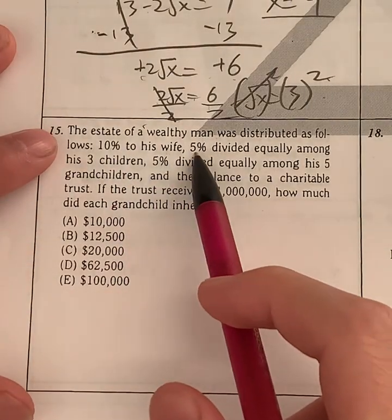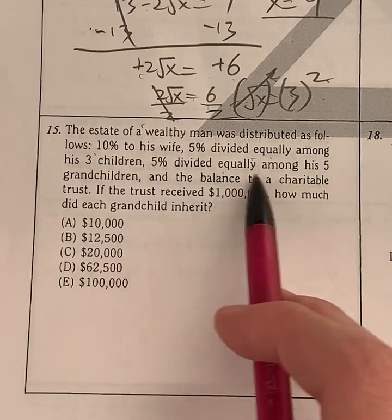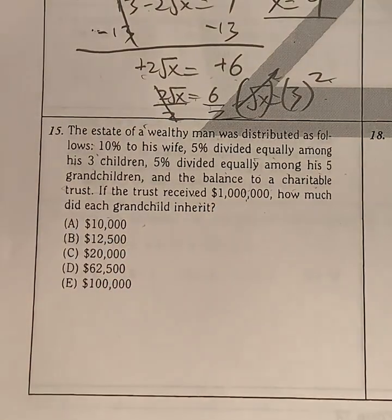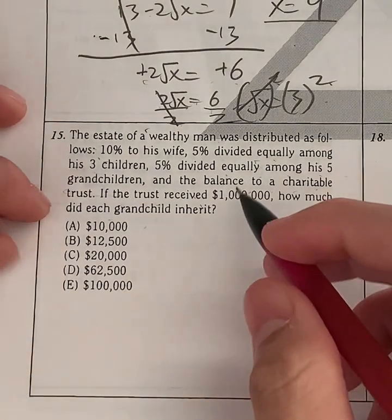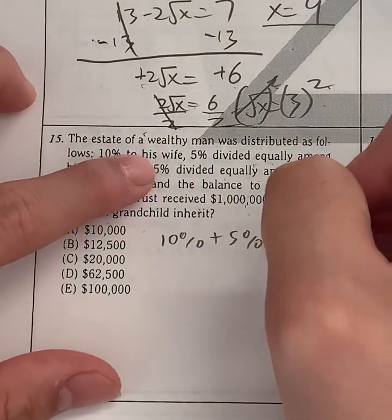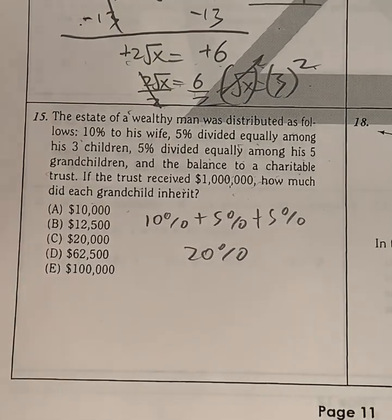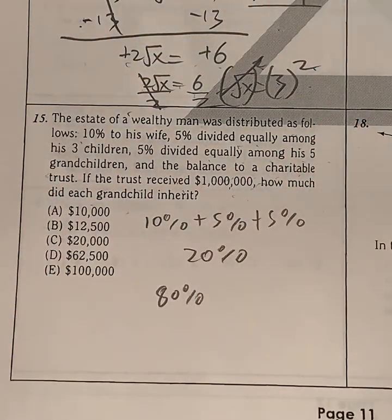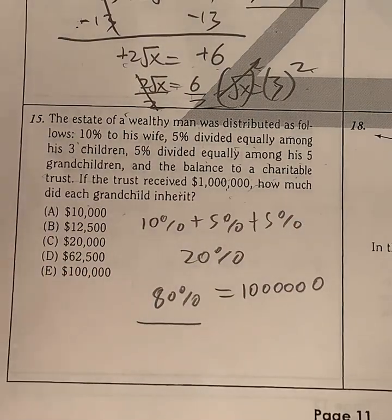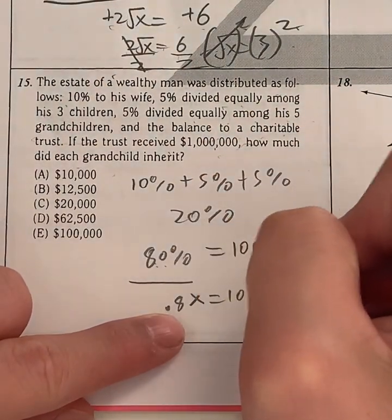Moving on, question 15. The estate of a wealthy man was distributed as follows: 10% to his wife, 5% divided equally among his 3 children, 5% divided equally among his 5 grandchildren, and the balance to a charitable trust. If the trust received $1 million, how much did each grandchild inherit? We need to find out how much was given to the trust, what percentage. 10% was given to the wife, plus 5% given to the children, and 5% given to the 5 grandchildren. So in total, 10 plus 5 plus 5%, that's 20%. So the remaining was given to the charity, which is 80%. So 80% equals $1 million. What is 80% written as a decimal? It's 0.8. So 0.8 times some number x equals $1 million.